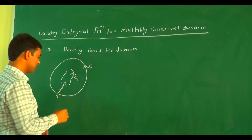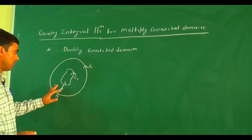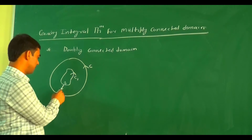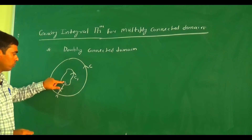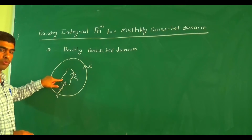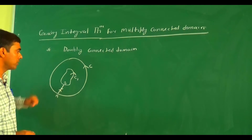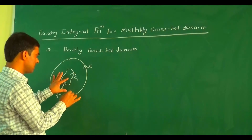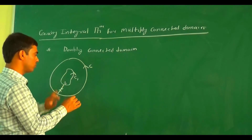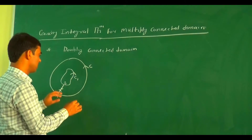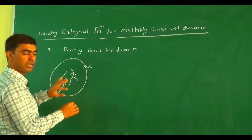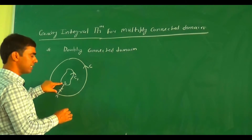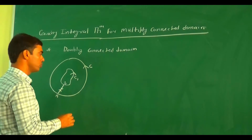If we closely observe this figure, we add one path from A to B and another path from B to A. This doubly connected domain becomes a simply connected domain by adding the path A to B and B to A.